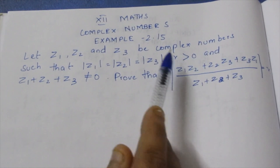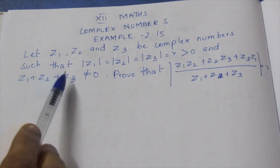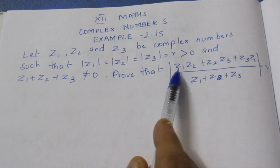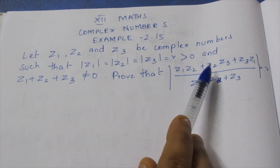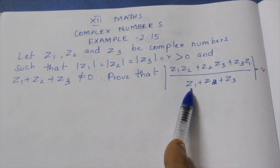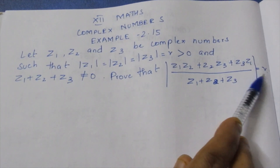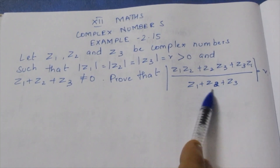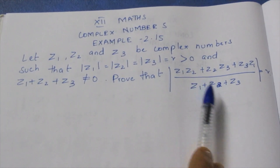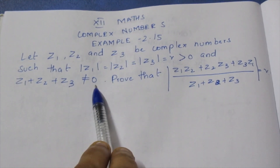R is greater than 0, so R is a positive number. And Z1 plus Z2 plus Z3 is not equal to 0. Prove that modulus of (Z1·Z2 + Z2·Z3 + Z3·Z1) divided by (Z1 + Z2 + Z3) equals R. The denominator is not equal to 0 because if it were, the expression would be undefined.